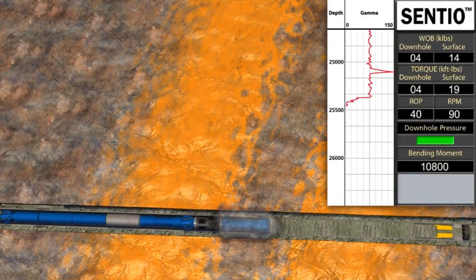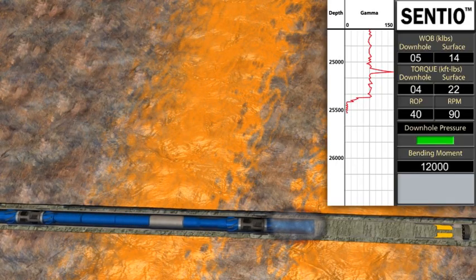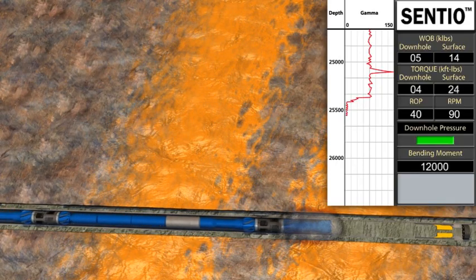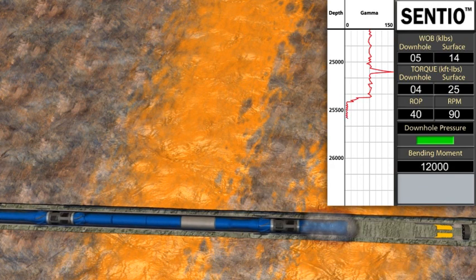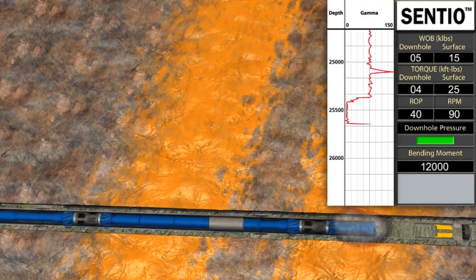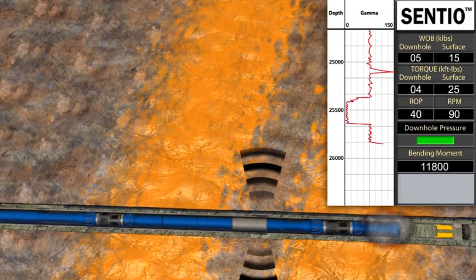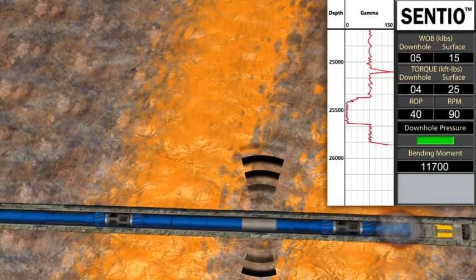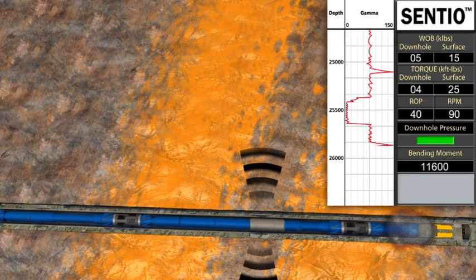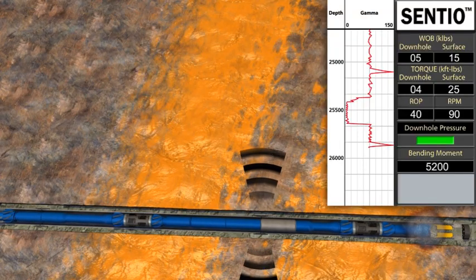In deviated wellbores, changes in weight and torque cannot be accurately measured from the surface. As the mills go from scraping residual cement to milling solid cement, the forces acting on the bottom hole assembly can change dramatically. The real-time downhole measurements from the Centio tool allow the operator to control the applied weight and torque to prevent work string failures and increase efficiency in the milling operations.